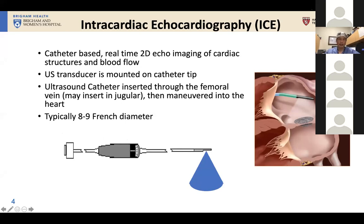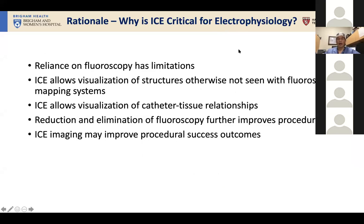ICE is a catheter-based technology that allows real-time 2D echo imaging of cardiac structures and blood flow. The ultrasound transducer is mounted onto the catheter tip. The catheter is inserted, usually through the femoral vein, and then maneuvered into the heart, typically between 8 and 9 French diameter. ICE allows visualization of structures you otherwise cannot see with fluoroscopy, even with mapping systems, including catheter-tissue relationships, which can be critical for a safe and effective procedure.